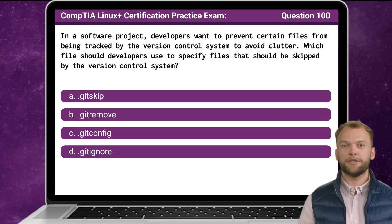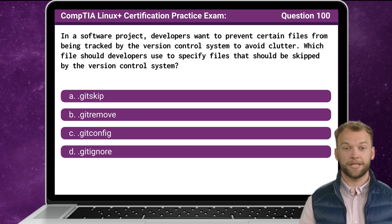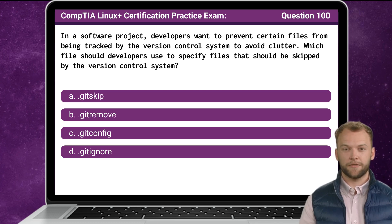Question 100. In a software project, developers want to prevent certain files from being tracked by the version control system to avoid clutter. Which file should developers use to specify files that should be skipped by the version control system?